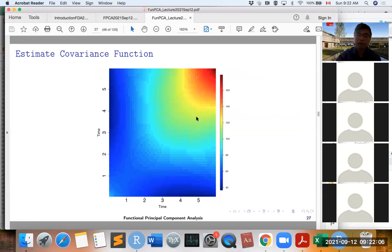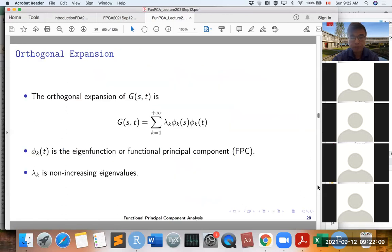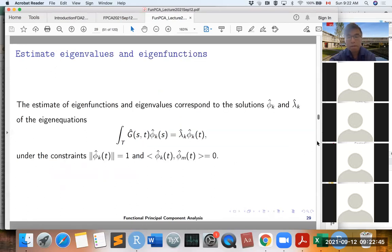This is the estimated covariance function. After we've got the covariance function, we can do the orthogonal decomposition, orthogonal expansion for G(S,T). So G(S,T) can be written as a linear combination of φ_k(S) times φ_k(T) multiplied by λ_k. Here, φ_k(T) is the eigenfunction of LPC, and λ_k is the non-increasing eigenvalues. We can estimate the LPC by solving the eigenequations for G(S,T).